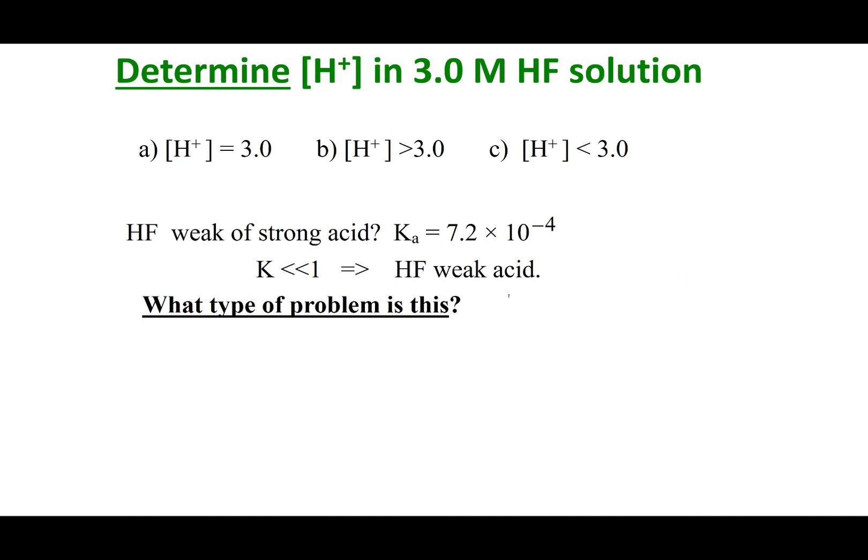Remember what a weak acid means. I have HF, and I'm going to draw an equilibrium arrow to H-plus plus F-minus. It's not going to break up completely - that's why I use the equilibrium arrow. So if it doesn't break up completely, I will never reach 3.0 molar with a 3.0 molar solution of HF. It can't be greater, so it should be less than 3.0.